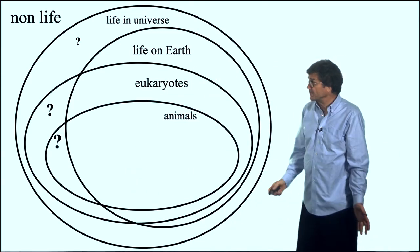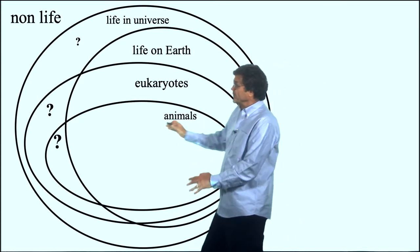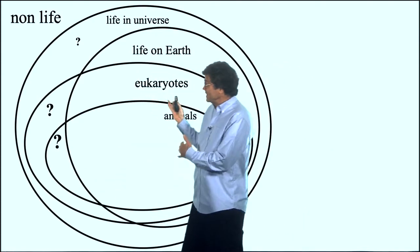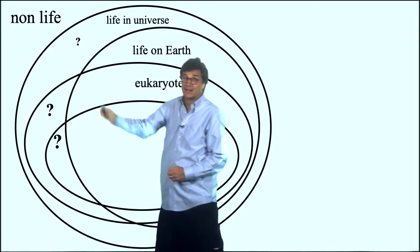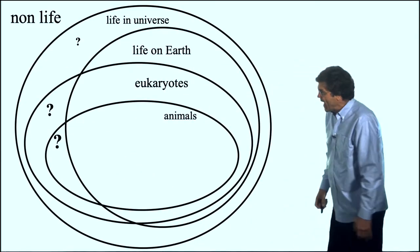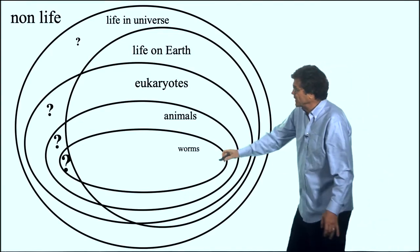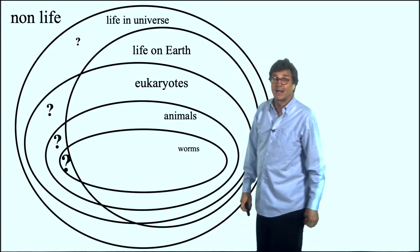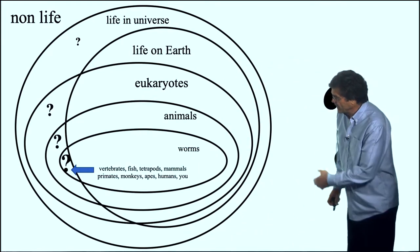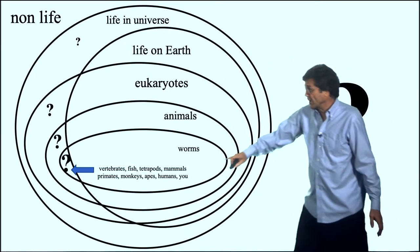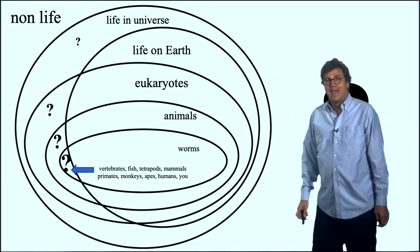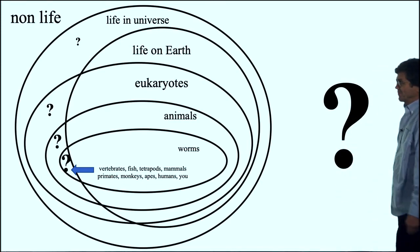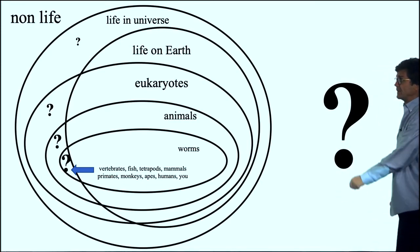Similarly, if we ask about animals, it's more doubtful that there are alien animals than alien eukaryotes, which is more doubtful than any kind of life at all. Worms are a type of animal — it's more specific, therefore more doubtful that aliens will be a kind of worm. We can get arbitrarily specific and talk about: are aliens fish, or tetrapods, or mammals, or monkeys, or humans? That's why there's a big question mark about those very specific things.